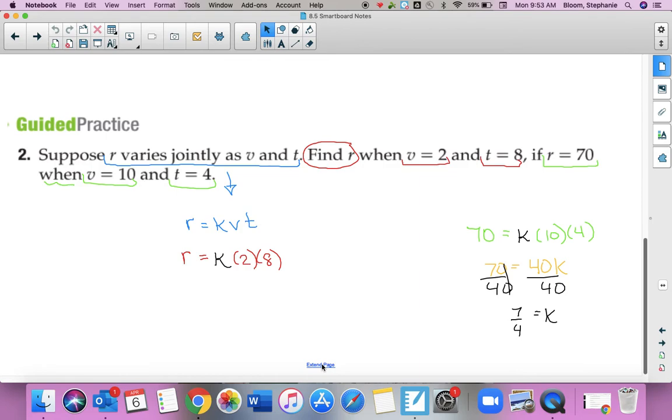So now I can take that 7 fourths and I can plug it in for my K. So 7 fourths times 2 times 8. And I'm going to go ahead and multiply these first. So 16 times 7 fourths. And I can simplify so I know R equals 28. And there are our examples on joint variation.